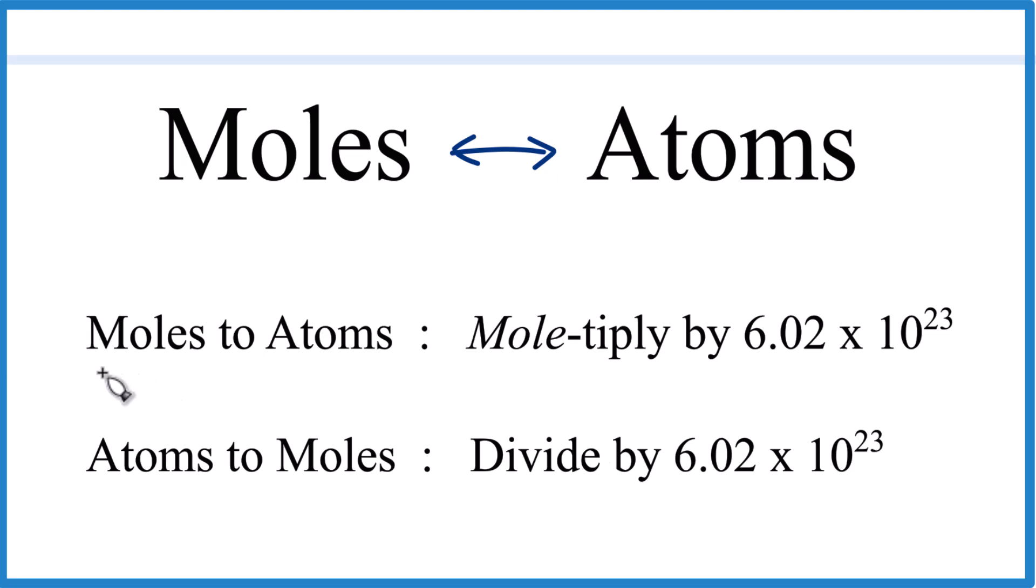When you go from moles to atoms, you multiply by Avogadro's number. It's silly, but you remember. And all you need to do is remember, moles to atoms multiply by 6.02 times 10 to the 23rd.